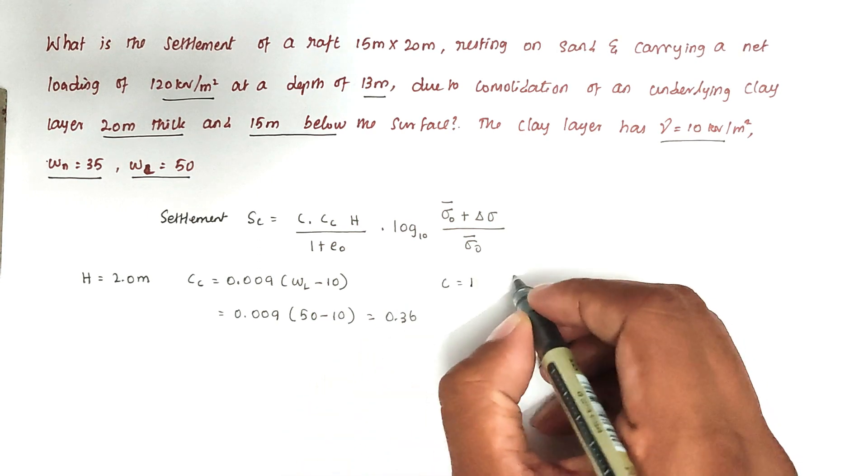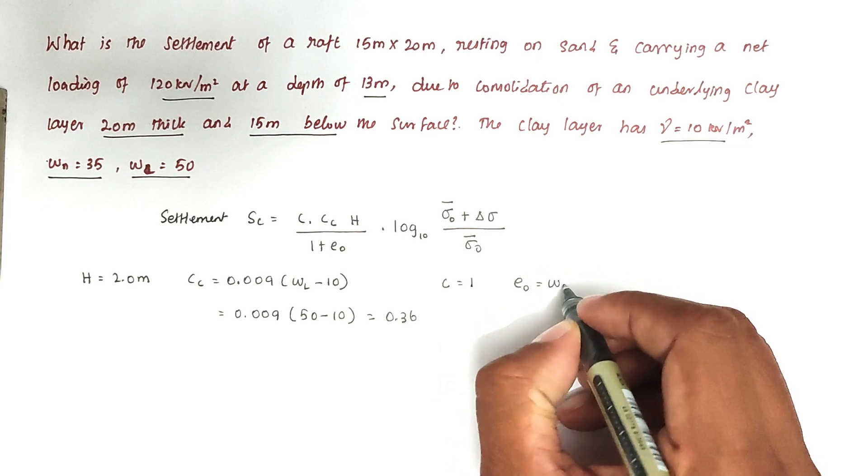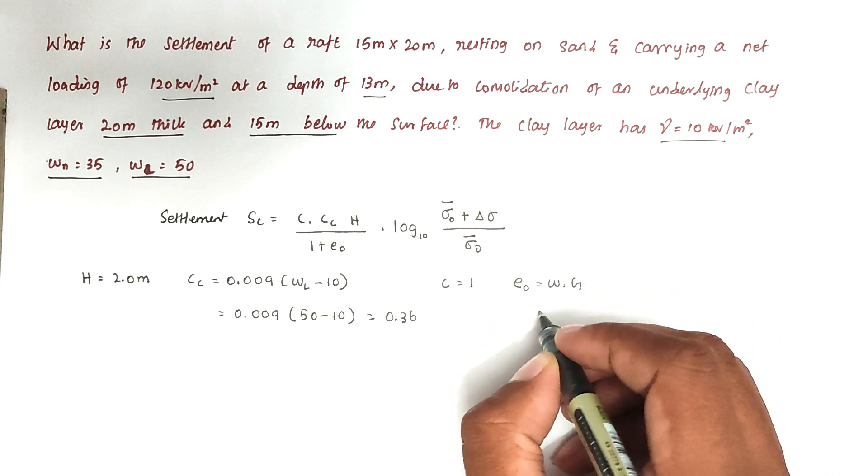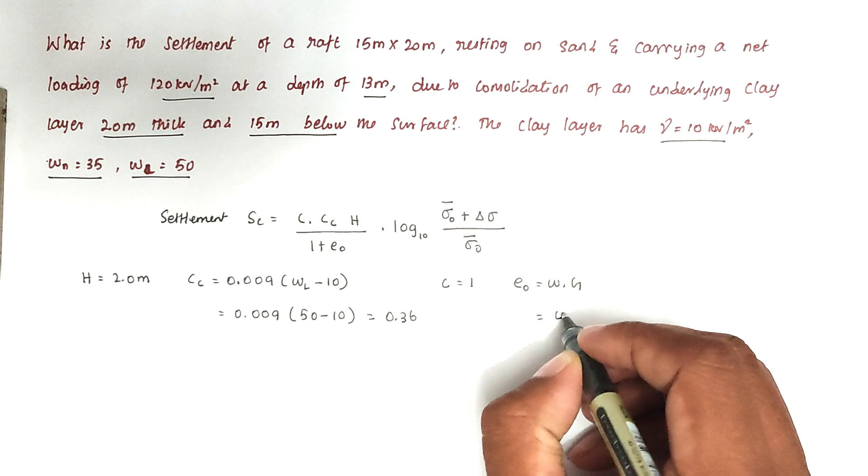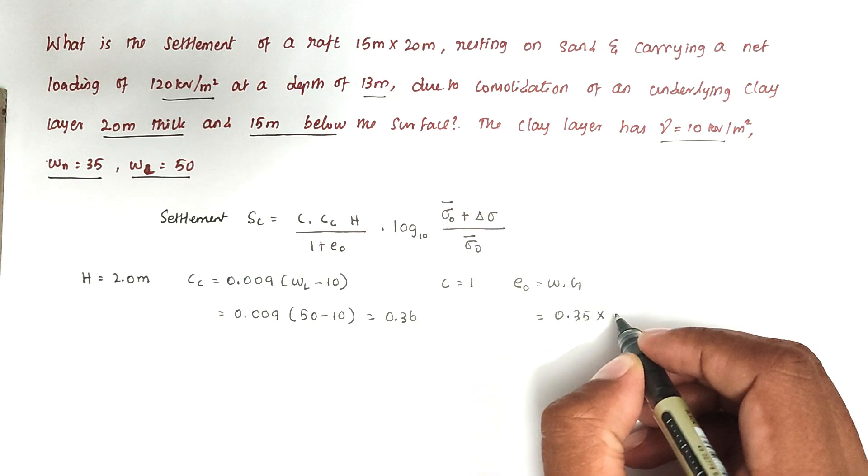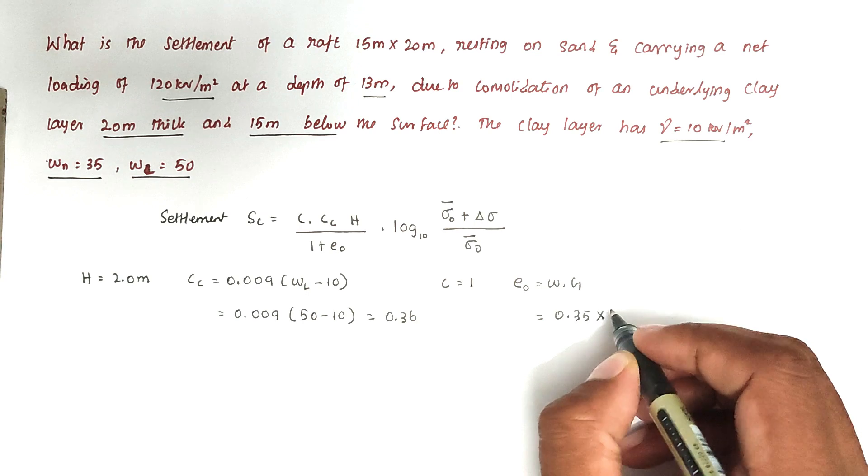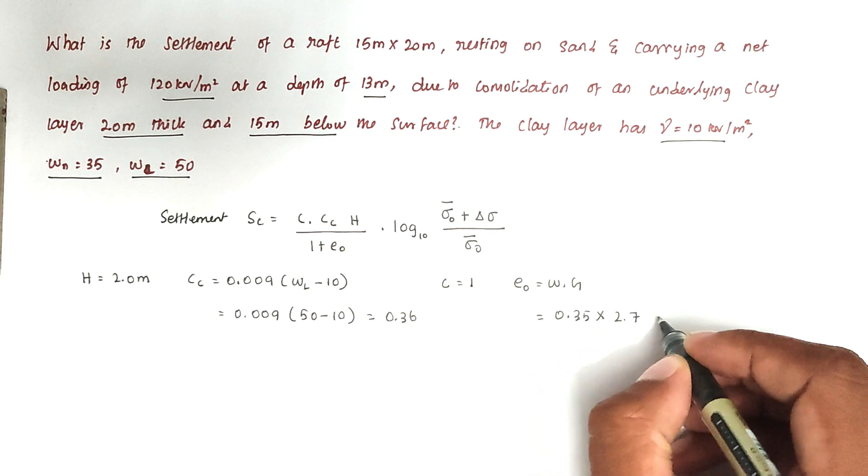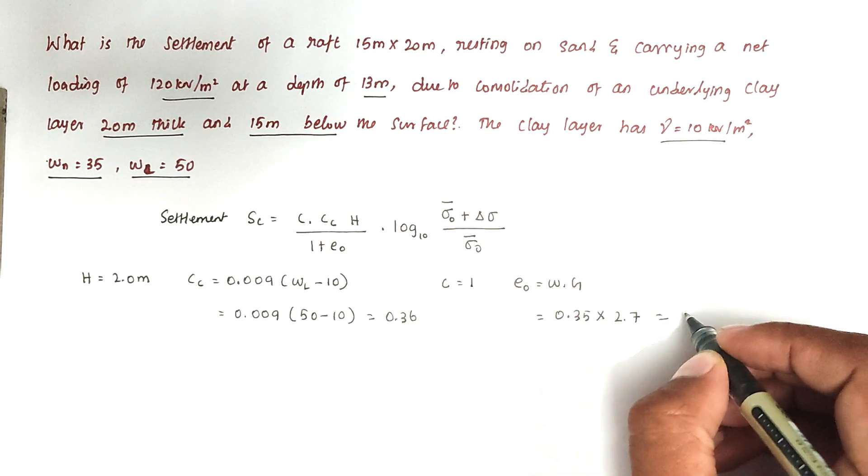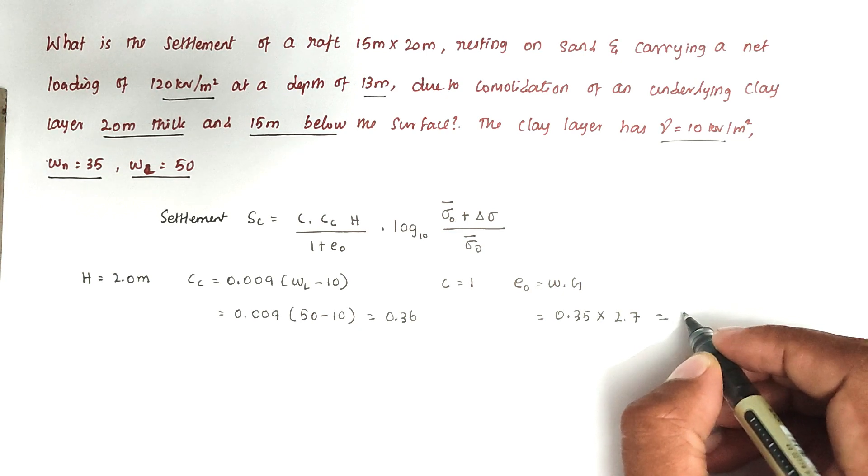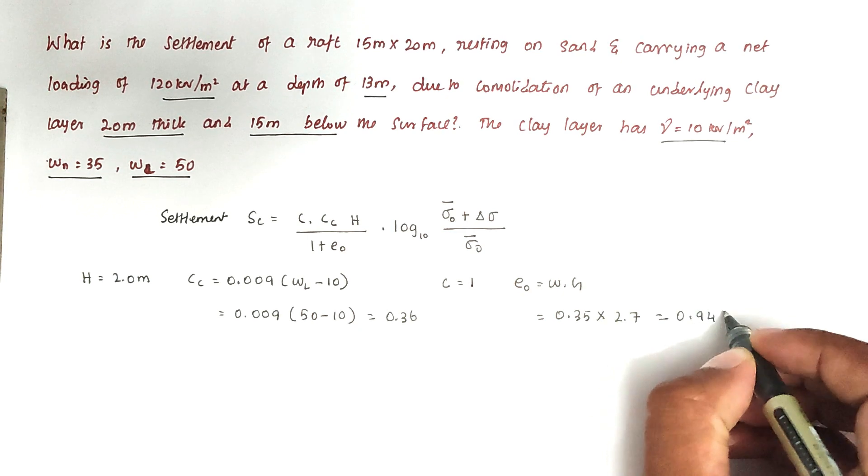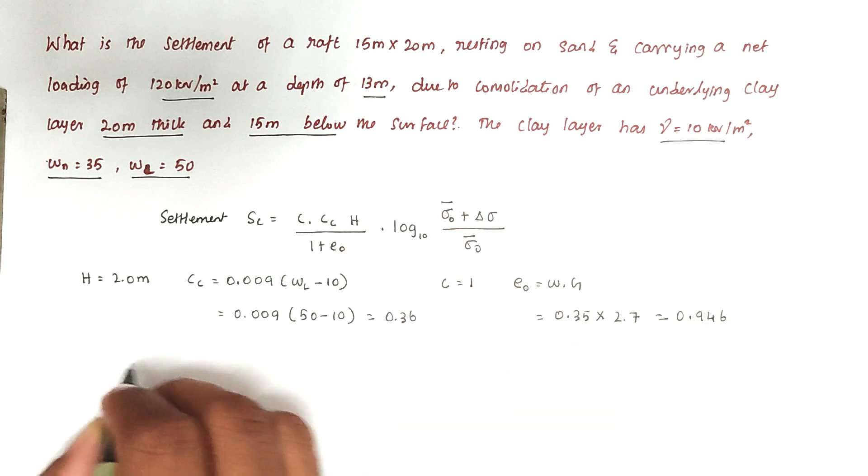C equals 1. E naught equals, the formula is W times G, that's the initial void ratio. So water content is 0.35 times the specific gravity 2.7, so the value will be 0.946.